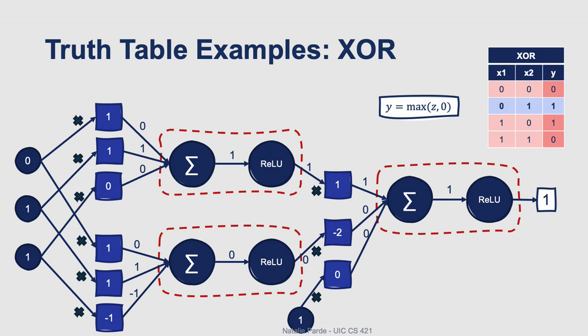Now I won't work through the other three cases in this video in the interest of time, but feel free to work through them on your own if you want. You'll find that in each case, we'll end up with an output value that matches what the truth table says we should have.